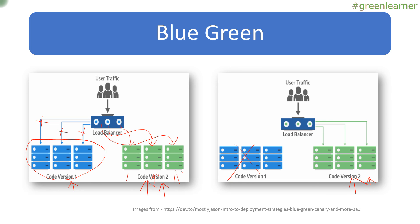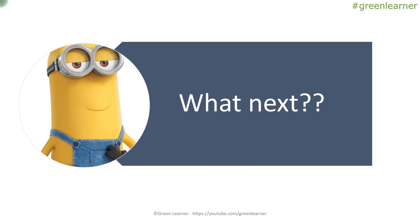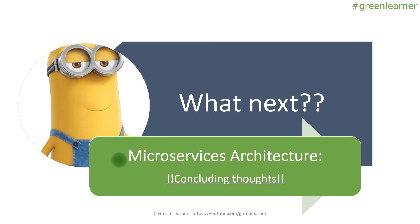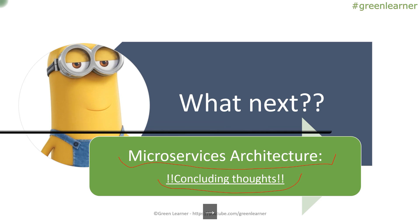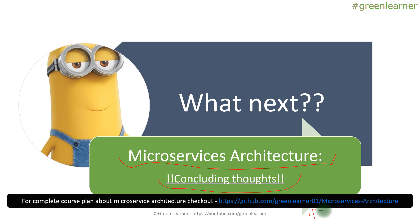Blue-green deployment is all about having two parallel production systems running at the same time. All the images and references I've used are from a linked resource — you can check out that link for more detail. This concludes the microservices architecture series as I planned. I've completed all the topics in theory and will wrap up with concluding thoughts and what you should explore next on the channel. I'll see you in the next video — take care, bye.